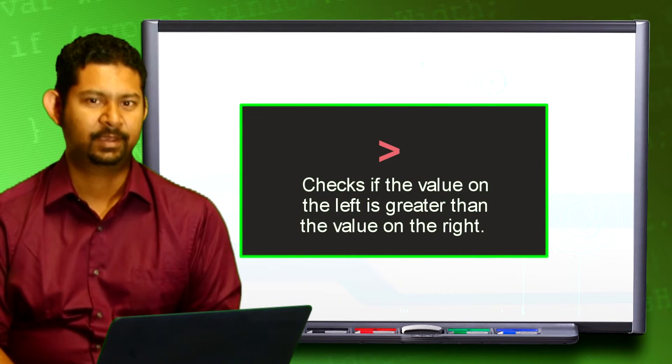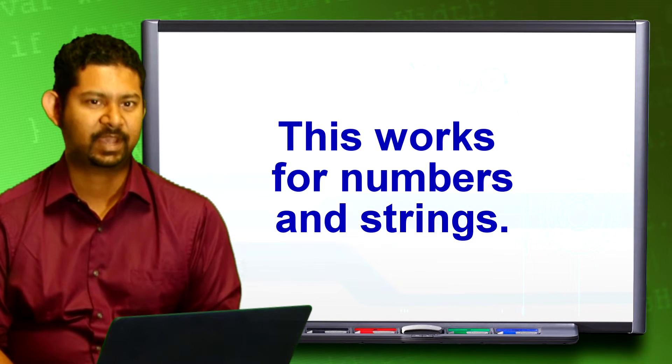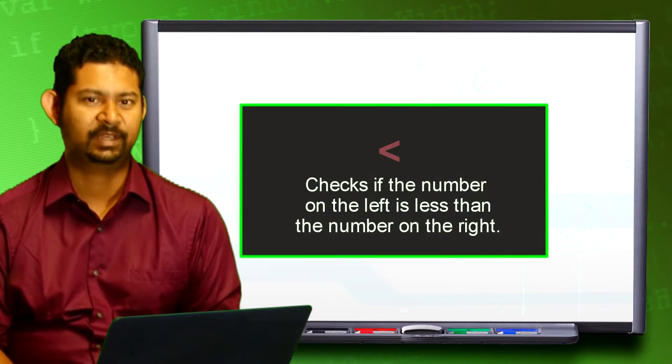Greater than. Checks if the value on the left is greater than the value on the right. This works for numbers and strings. Less than. This checks if the number on the left is less than the number on the right.